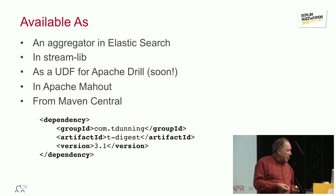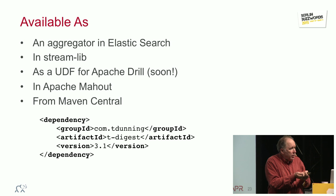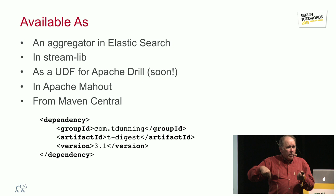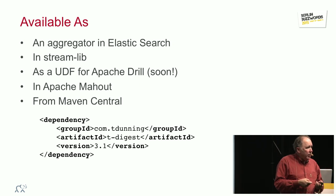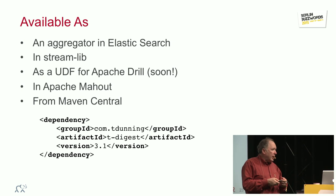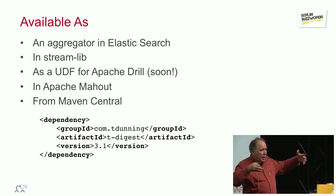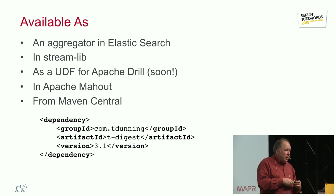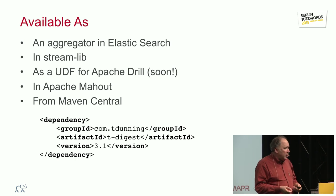You can use T-digest as an aggregator directly in Elasticsearch. A guy who was on this stage earlier, Adrian Grand, integrated this into Elasticsearch. You can use it from Streamlib, which is a collection of algorithms for doing approximate counting and things like that. You can use it as a UDF for drill. That's not quite released yet, but it will be soon. It's already in Apache Mahout, and it's in Maven Central.